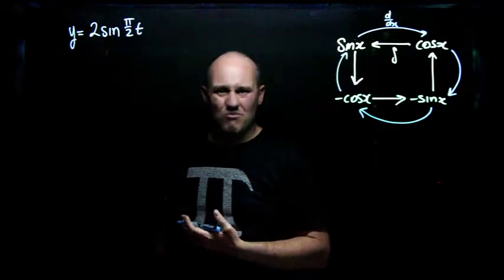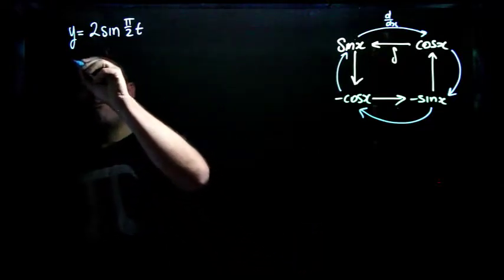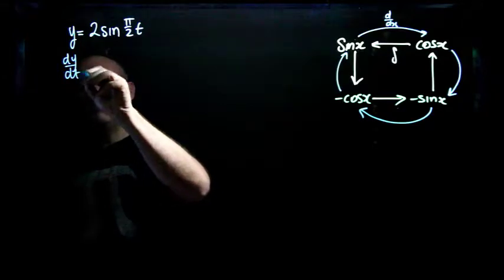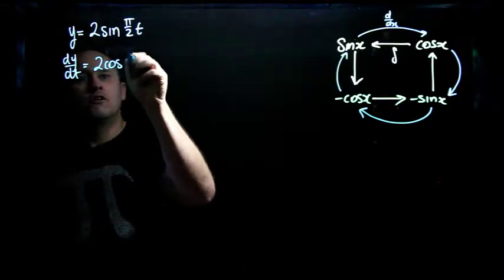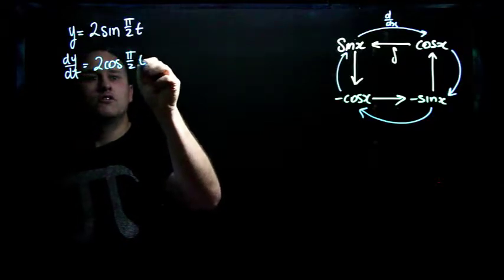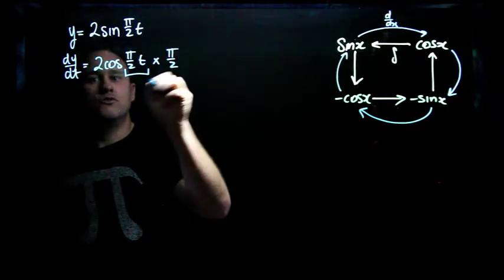So this is more like a motion situation. I've got t in here, which usually represents time. To find my rate of change, which in this case will be dy/dt, well, then I get 2 cos π/2 t times by the derivative of the inside, which is π/2.